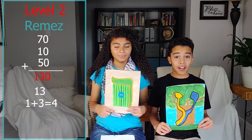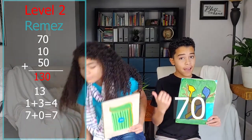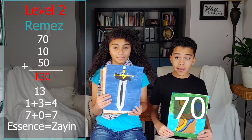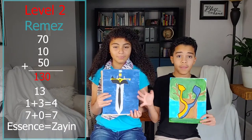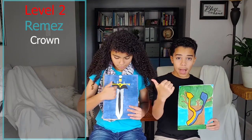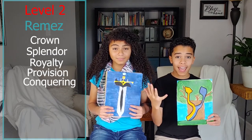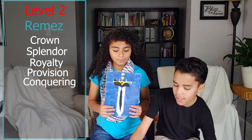If you take the numerical value of the ayin, which is 70, and add 7 plus 0, you get 7. So the essence of this letter is actually Zion, because the numerical value of Zion is 7. It represents crown, splendor, royalty, provision, conquering, and splendor.